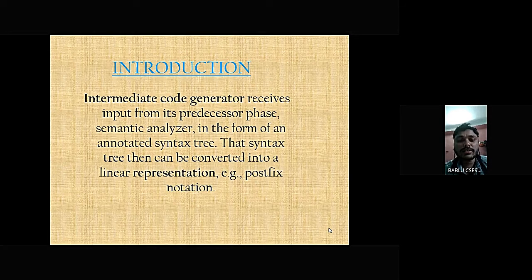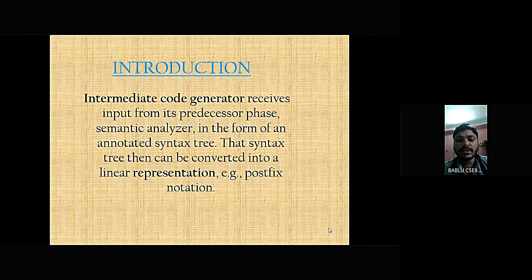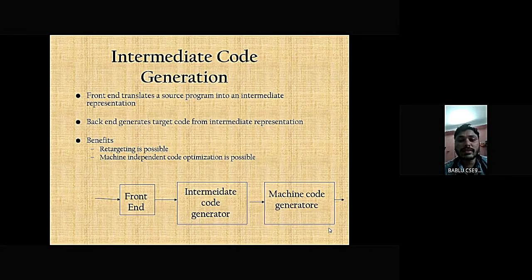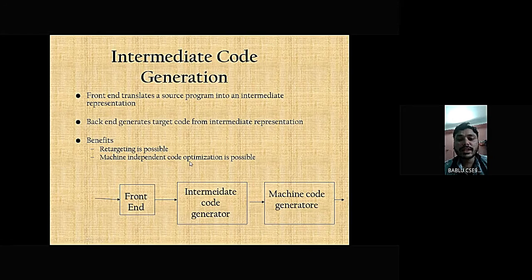The intermediate code generator takes input from its predecessor phase, the semantic analyzer, in the form of an annotated syntax tree. That syntax tree can then be converted into a linear representation. In intermediate code generation, the front end translates a source program into an intermediate representation, and the back end generates target code from that intermediate representation.